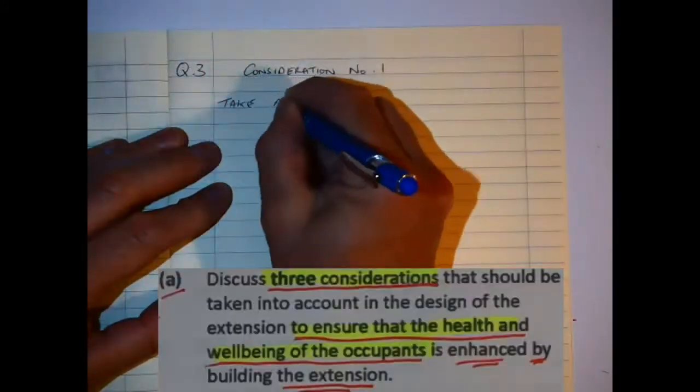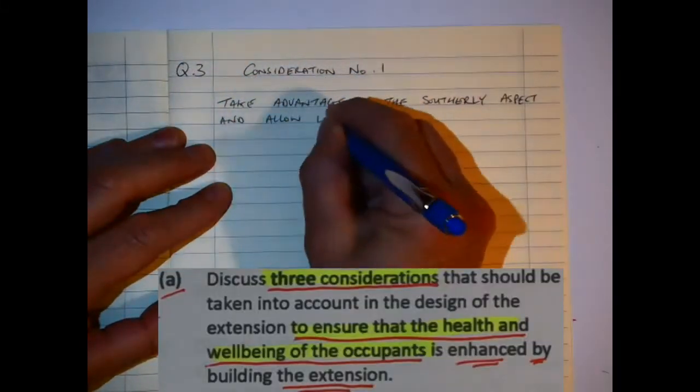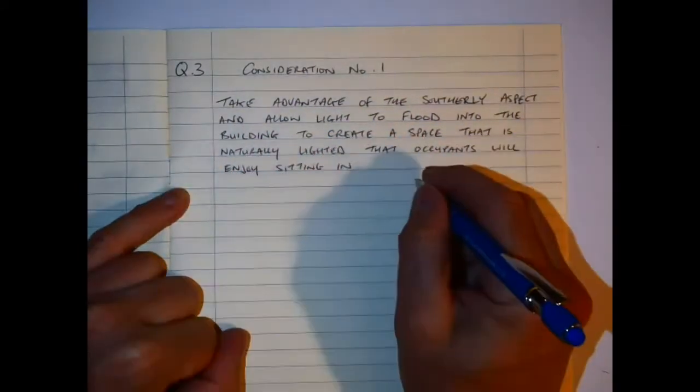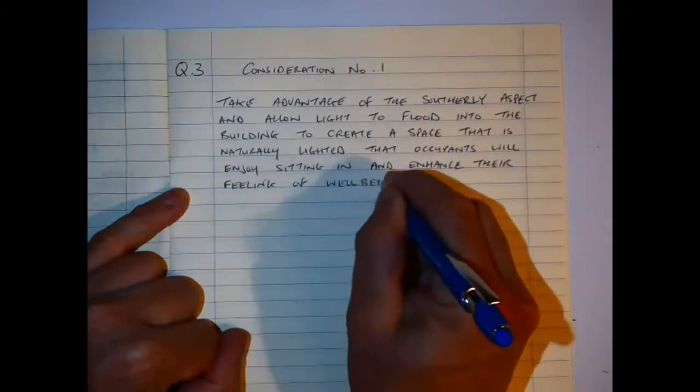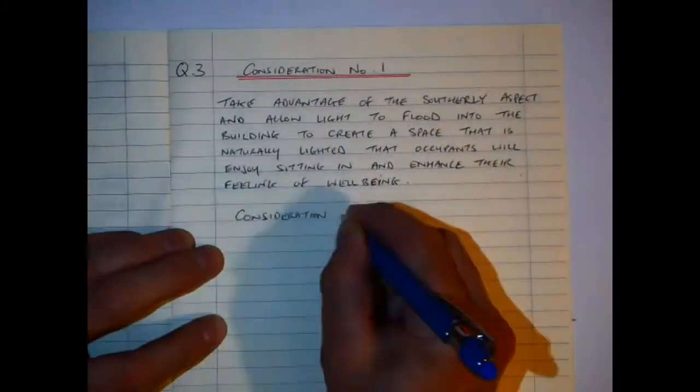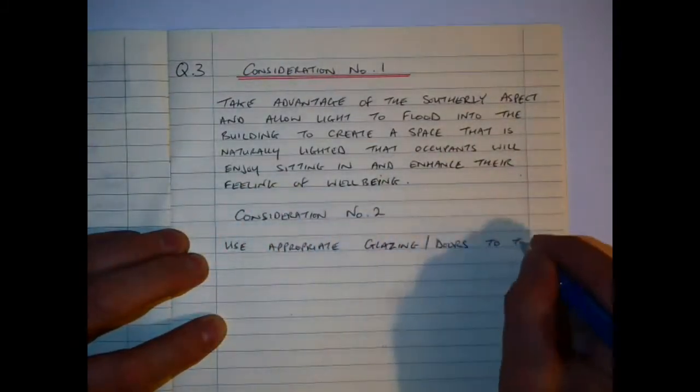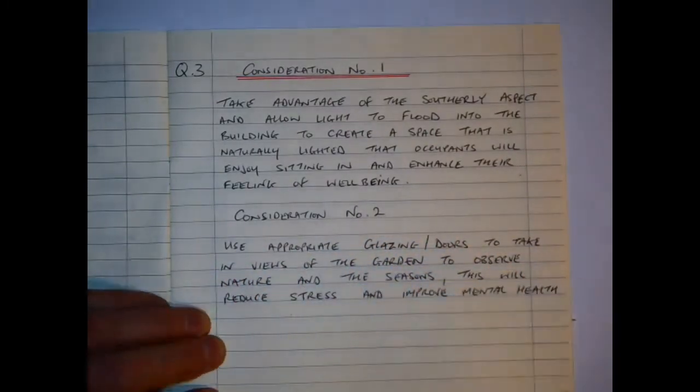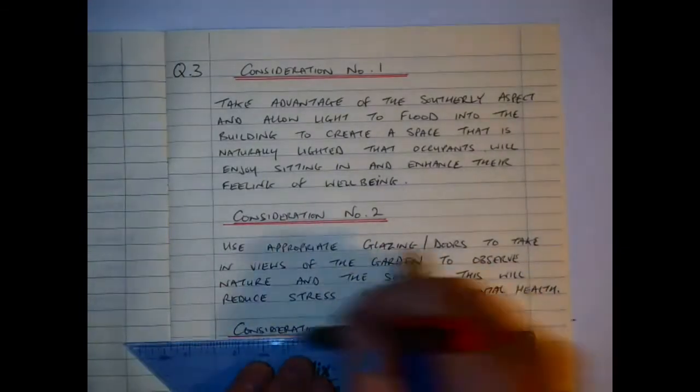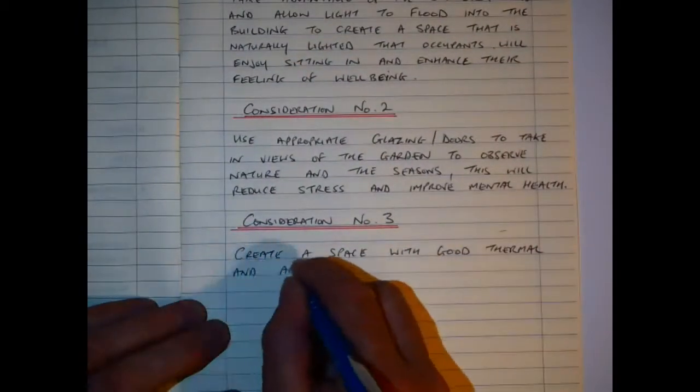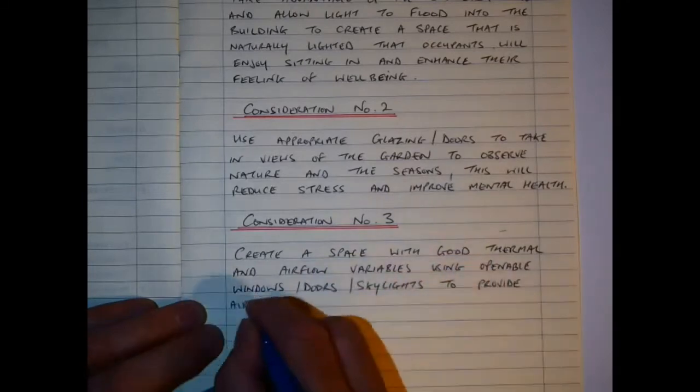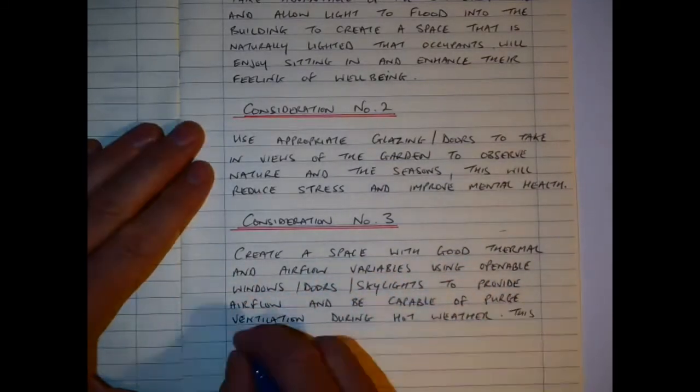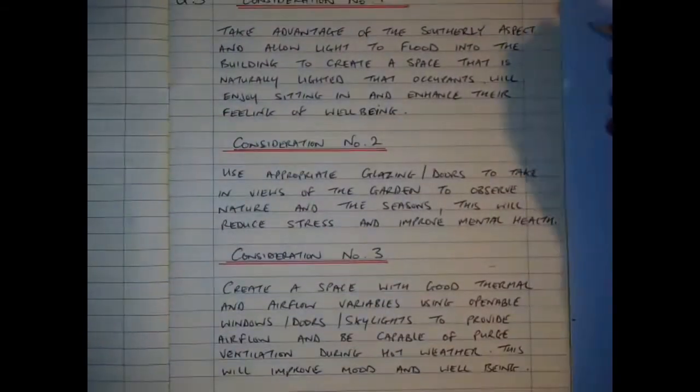Starting straight into it, consideration number one: I wanted to take advantage of the solar aspect and allow light to flood into the building, create a space that's naturally lighted. Consideration two is to use appropriate glazing and doors to take in the views of the garden, to observe nature and the seasons, which will help reduce stress and is good for mental health. Consideration number three is to create a space with good thermal and airflow variables, so you have openable doors and skylights to provide good airflow, capable of purge ventilation during hot weather.